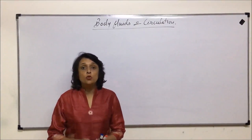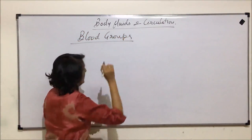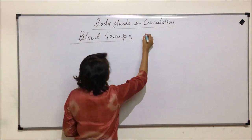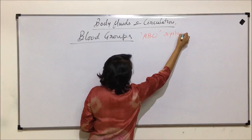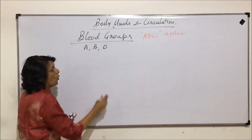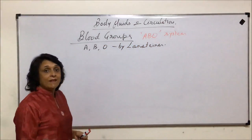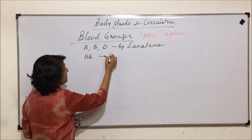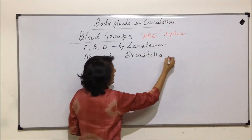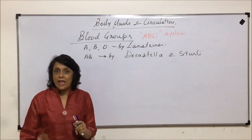We are now starting with blood groups. When we talk about the blood group system in human beings, we are talking about the ABO system. The blood groups A, B, and O were explained by Landsteiner, whereas blood group AB was explained by Dicastello and Storley. This is how we have four blood groups, but the system is known as ABO.